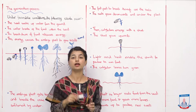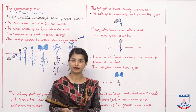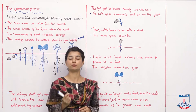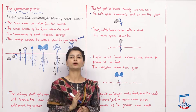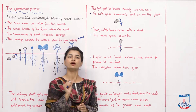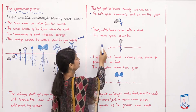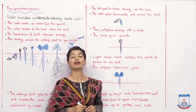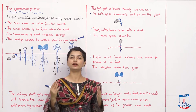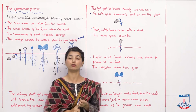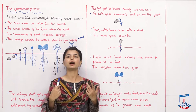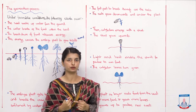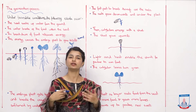Then, cotyledons emerge with a shoot. The shoot grows upwards — roots are downwards and shoots are upwards. Light and heat enable the shoot to produce its own food. When the shoot comes out of the surface into open air, there is light, there is heat, and water and oxygen are also available. The shoot can now make its own food. It no longer relies on the energy released from the food stored in the seed.